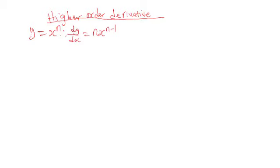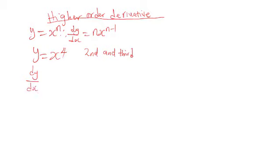When you're talking about higher order derivative, it talks about further finding the derivative to a lower term. For example, if you have x raised to power 4 and you're being told to look for the second and third derivative, what you need to do — you know the rule — dy/dx is simply equal: n is 4, so you write 4x, then 4 minus 1.